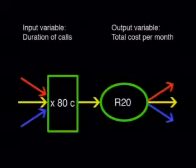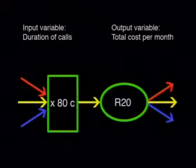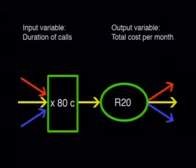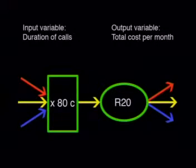To find the total cost per month we must add this fixed cost to the cost of making calls. Our completed flow diagram looks like this: the input variable, the duration of calls, is multiplied by 80 cents, then we add 20 rand which is the fixed cost. This gives us the output variable, namely the total cost per month for using a telephone.